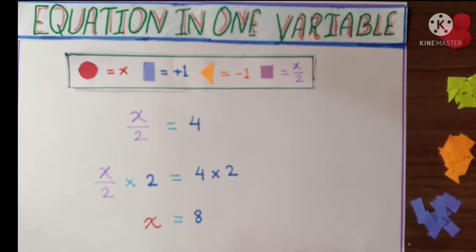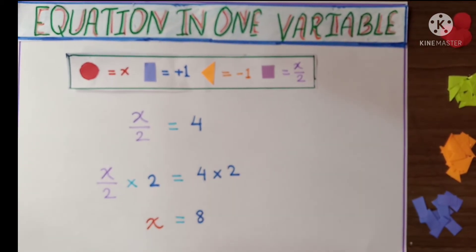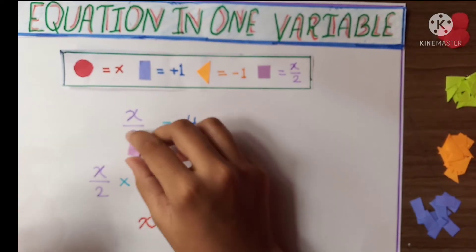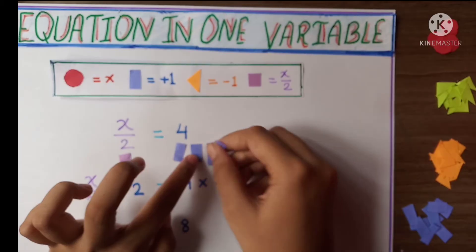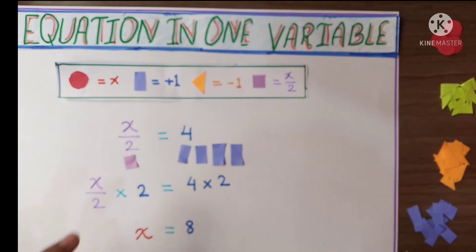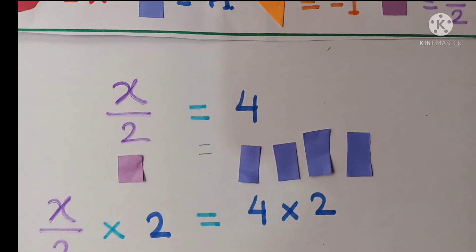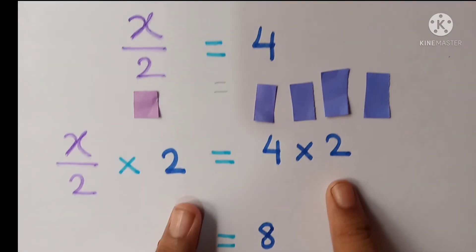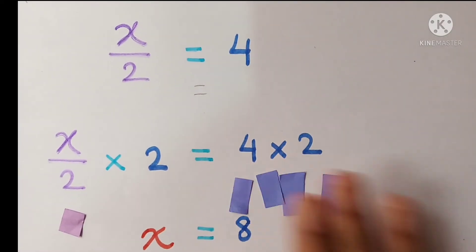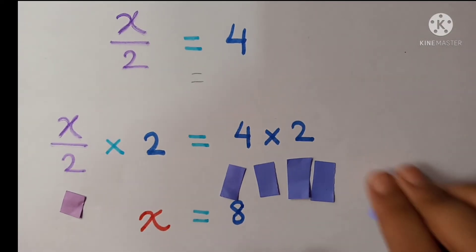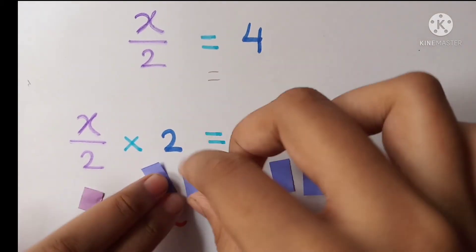Here is our last equation, fraction, that's x by 2 equal to 4. So here is our x by 2 equals to 4. Here let's give 4. Here is our denominator 2. So on both sides LHS and RHS will multiply by 2. So here is our x by 2, 4 into 2, and here also will multiply by 2.